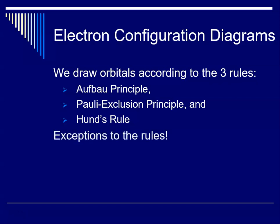There are some exceptions to these rules, and those exceptions are in groups 6 and 11 on the periodic table. So we hold you responsible for chromium, copper, and molybdenum, and I will show you how that works.